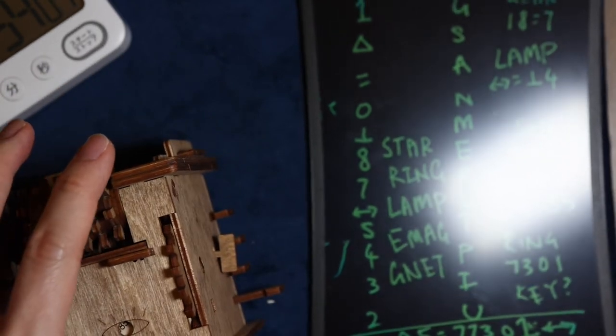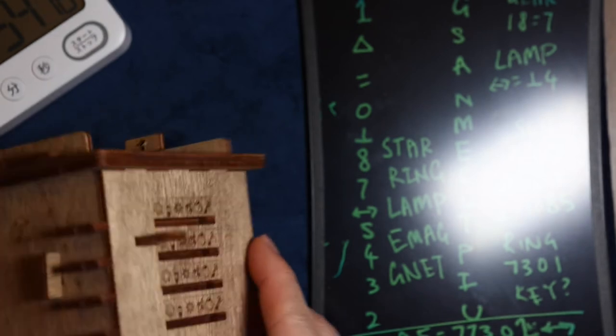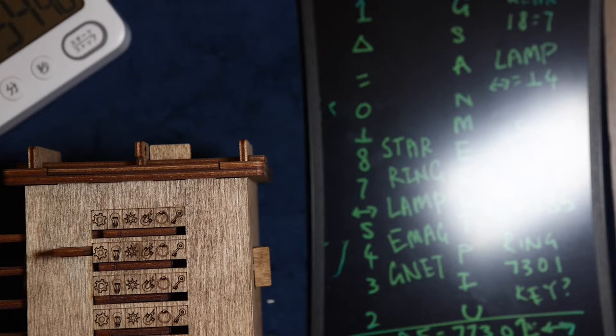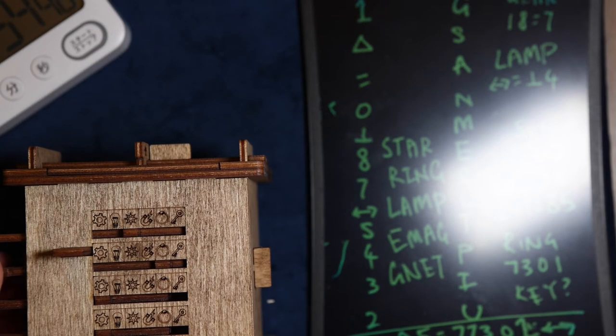So there's a star, a lamp, a ring, and a magnet. So I have four different English words which corresponds to these pictures here. And I just have to move these sliders on the side. And hopefully this will unlock part of the box.